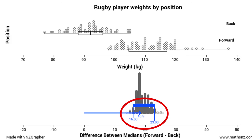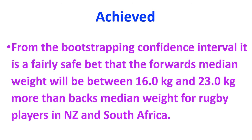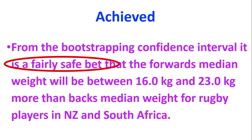When we look at our estimate, we've got our confidence interval of between 16 and 23. At the Achieved level, we're going to write this up and say: from that bootstrap confidence interval, it is a fairly safe bet. That tells us we're pretty confident, pretty certain — not absolutely certain, but remember it's about 90% around about there. A fairly safe bet covers that.